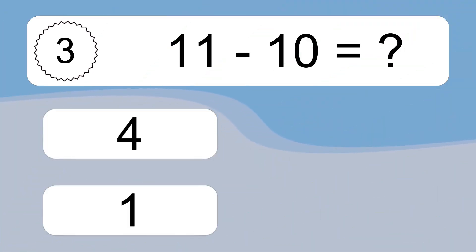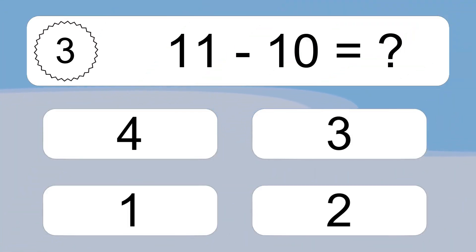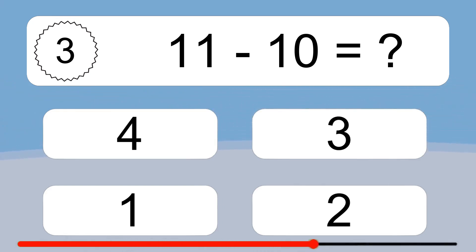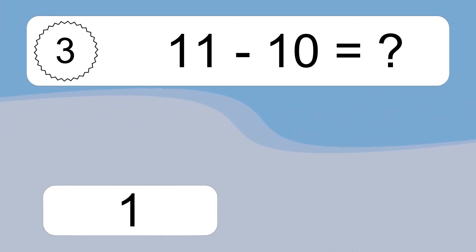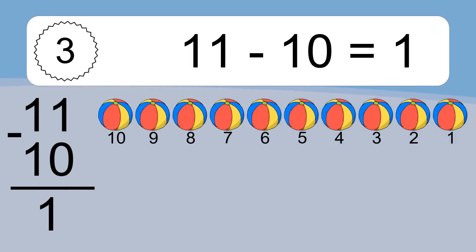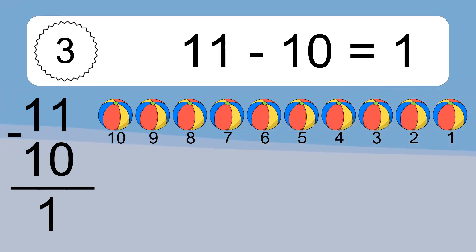11 minus 10 equals what? 11 minus 10 equals 1. Let's count it! 10, 9, 8, 7, 6, 5, 4, 3, 2, 1.